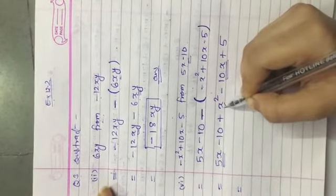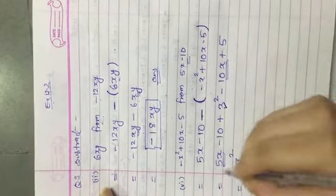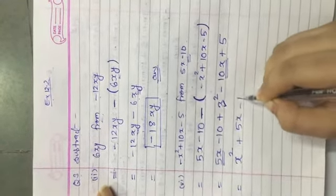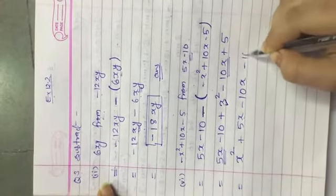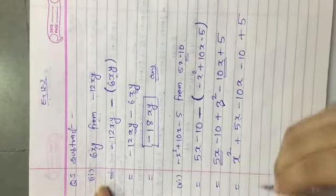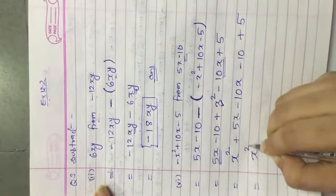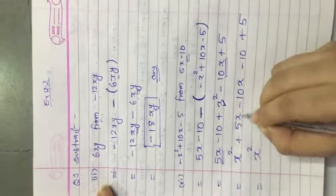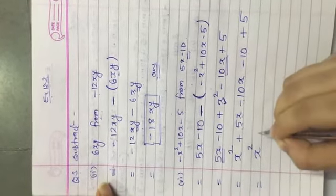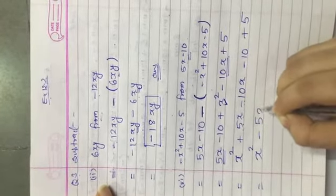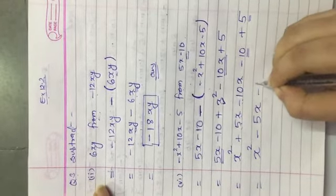First we will arrange the like terms. Here 5x and 10x, these are like terms. X square has only one term, so first we will write that. X square, then 5x minus 10x together because these are like terms, and then minus 10 and plus 5, these are constants. X square will not be solved because it is a single term with no like term here. See, 5x minus 10x, so plus 5 minus 10, the answer is minus 5x. And here minus 10 and plus 5, so again minus 5.